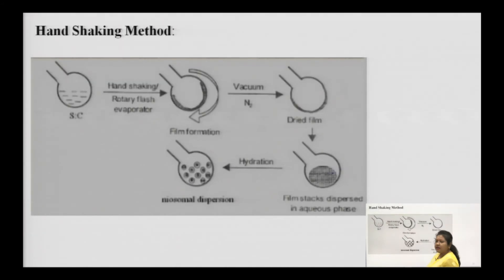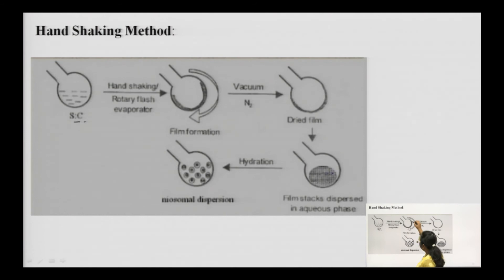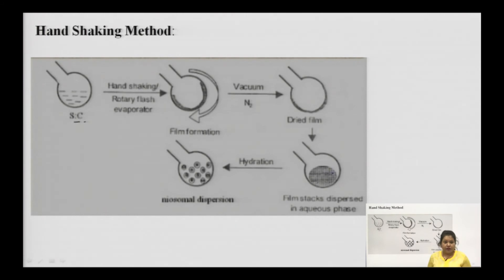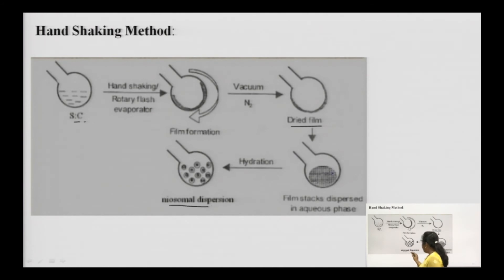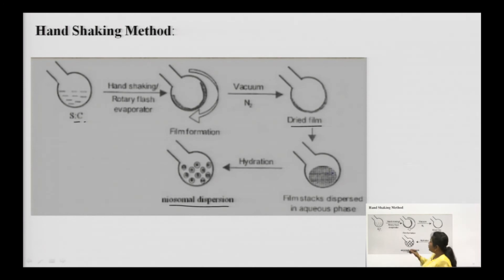Hand shaking method is similar to liposomes preparation. You take surfactant and cholesterol, rotate using a rotary evaporator to form a film, then provide a vacuum environment so the organic solvent evaporates. After evaporation, a dried film is obtained; then you hydrate or rehydrate it, and upon rehydration you get your neosomal dispersion. You take surfactant, cholesterol, the drug, and the organic solvent.